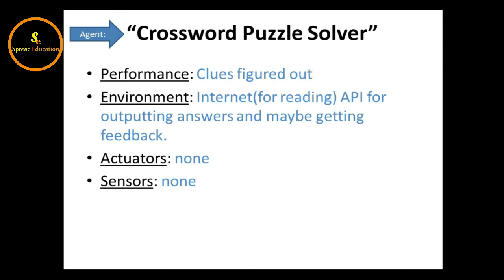Next example: a Crossword Puzzle Solver agent. The Performance measure is to figure out clues. The Environment includes the internet for reading and an API for outputting answers and getting feedback. For this agent, Actuators and Sensors may be none — you have to write that as none.